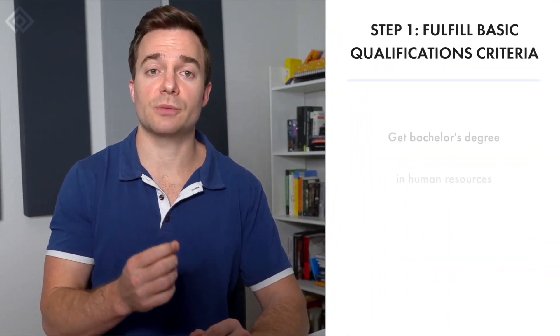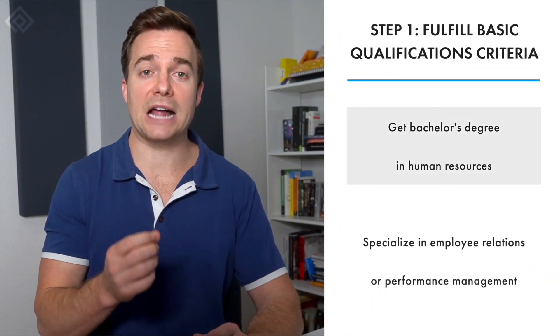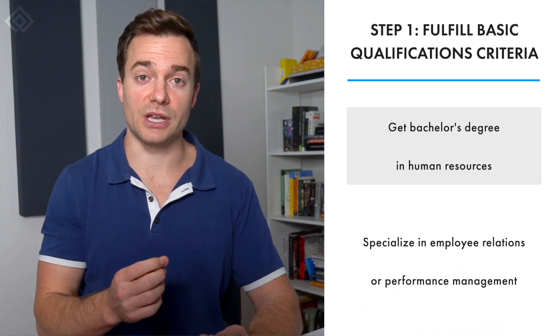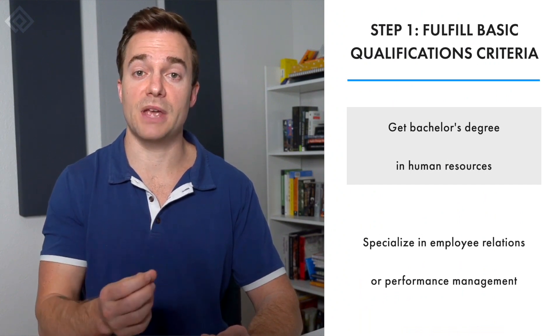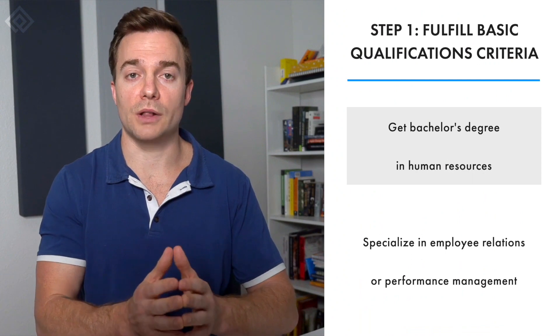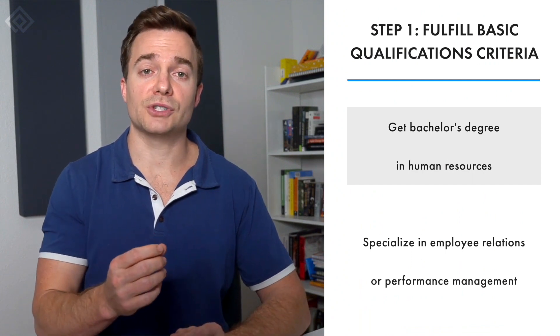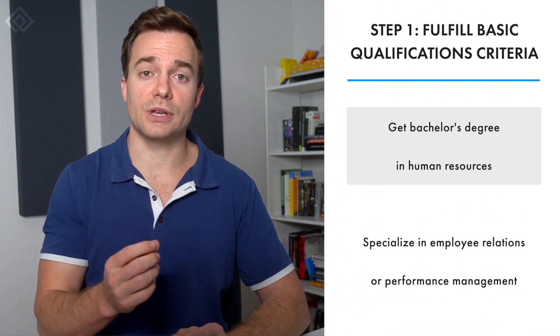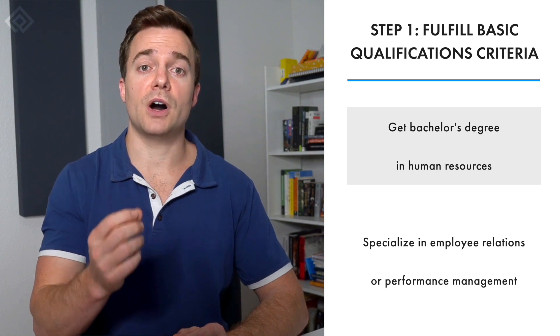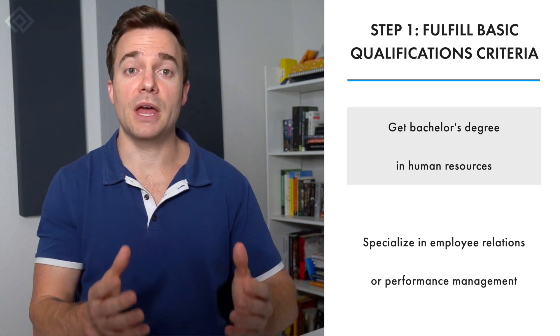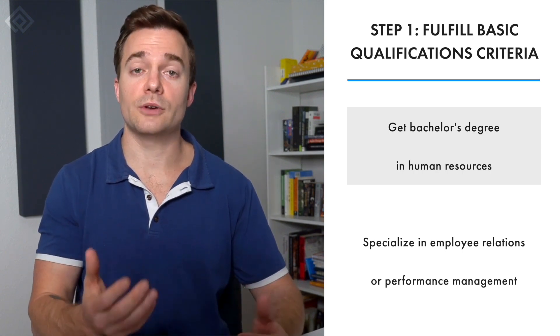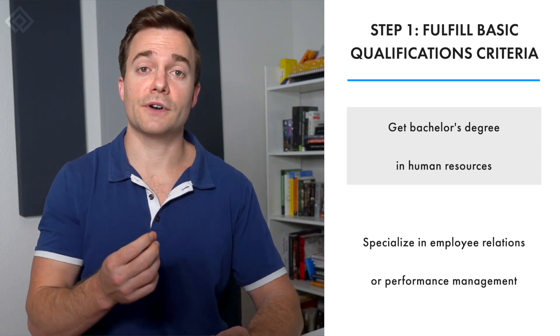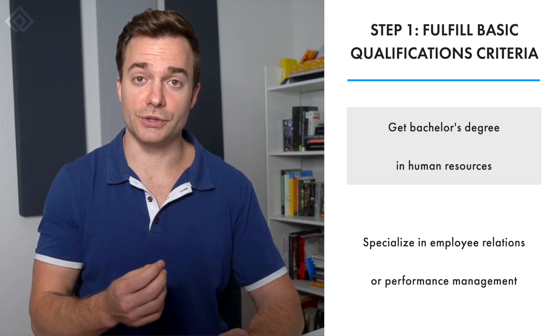A director of people plans, develops, directs, and leads the human resources department and implements work policies in an organization. Becoming a director of people demands at least a bachelor's degree, if not a master's degree, in human resources and business management or any other relevant field. Fulfilling the qualifications criteria is not just about earning the degree as a piece of paper, but it involves acquiring the basic yet fundamental human resources knowledge you'll need to secure a director of people role.